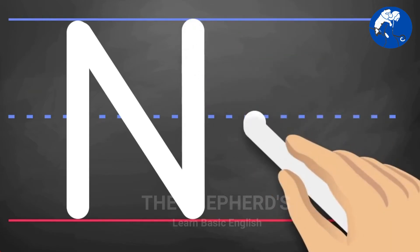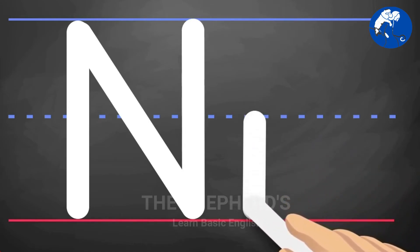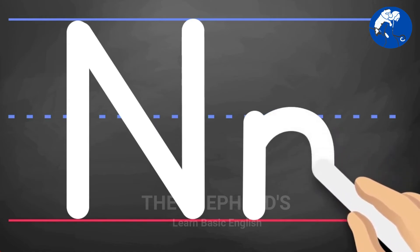Lowercase N: Pull down. Back to the middle, up, around, and pull down.